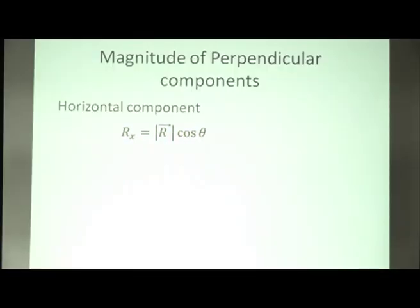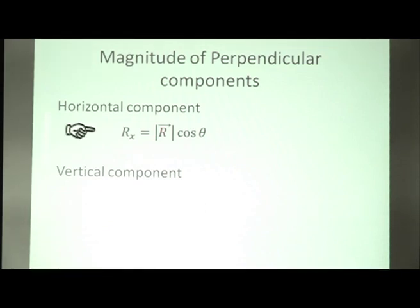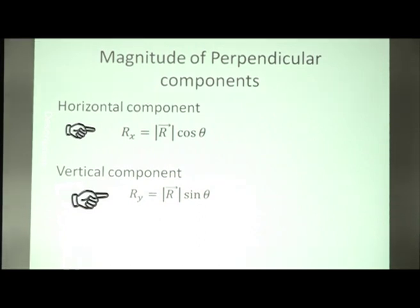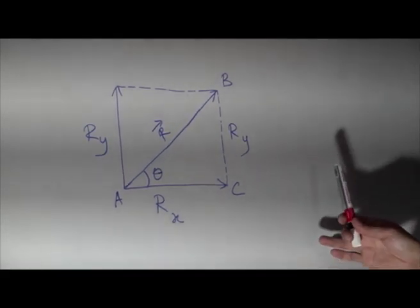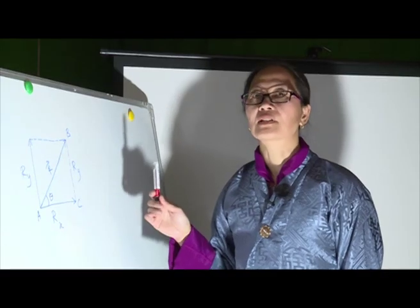Now we have formulas for calculating the magnitude of perpendicular components. For the horizontal component, we use the formula rx is equal to the magnitude of vector r times cos theta. Here, the magnitude is that of the given vector, and theta is the angle between the given vector and the x-axis taken in the positive direction. For the vertical component, the formula is ry is equal to the magnitude of vector r times sin theta.